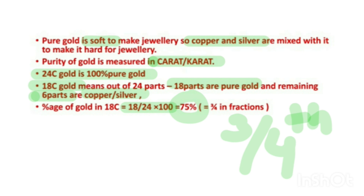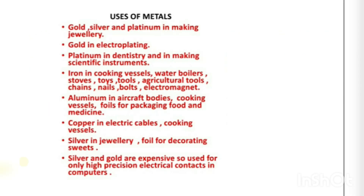Here are the uses of some common metals. Gold, silver, and platinum, which lie at the bottom of the reactivity series, are used in making jewelry. Gold is also used for electroplating cheaper metals to make them appear like gold. Platinum is used in dentistry and in making scientific instruments. Iron is widely used in making cooking vessels, water boilers, stoves, toys, tools, and agricultural implements.